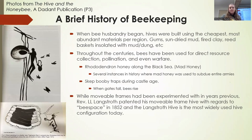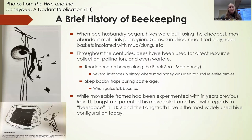Throughout the centuries, bees have been used for direct resource collection, pollination, and interestingly enough, even warfare. The rhododendron honey along the Black Sea — you may have heard about mad honey — has such a high concentration of rhododendron nectar that it can actually be poisonous or a hallucinogen. Unsuspecting armies would collect the honey, thinking everything was fine, and by the next day they'd be so incapacitated they couldn't fight. The locals caught on, stashed it, and started feeding it to invading armies. Multiple armies were completely subdued by it. That said, rhododendrons aren't thick enough in this area to really cause a problem, so if you've got a few in your yard, please don't worry.